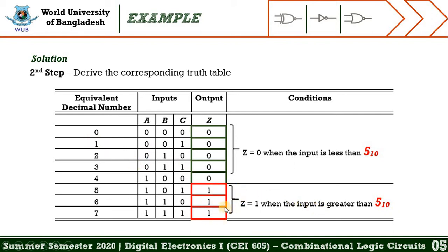A question may arise in your mind. Generally in a truth table we only get inputs and outputs, but in this truth table there are two extra columns: the equivalent decimal number and the condition. These two things are added for your clear understanding about the condition and how to derive the truth table while maintaining the given condition.